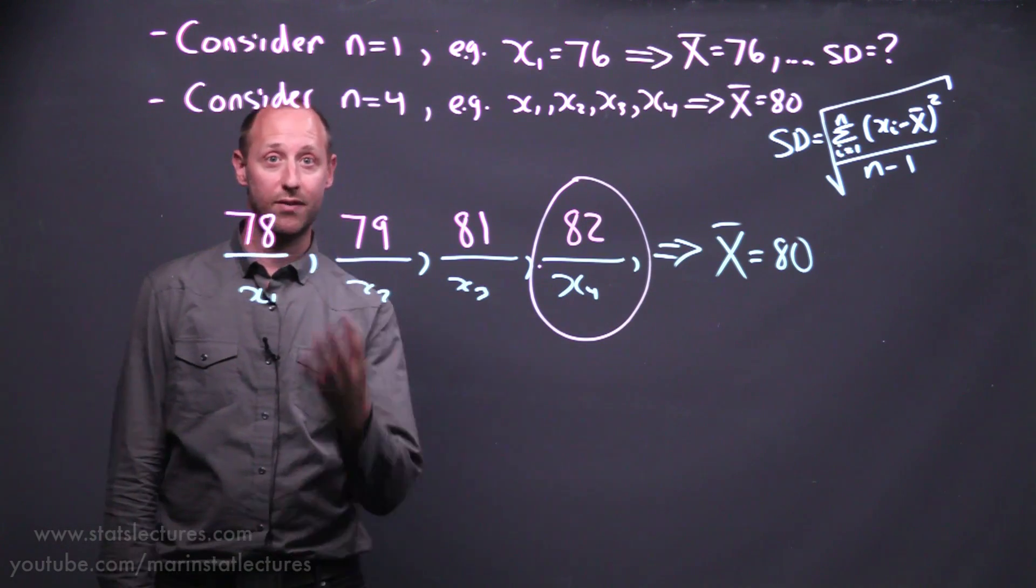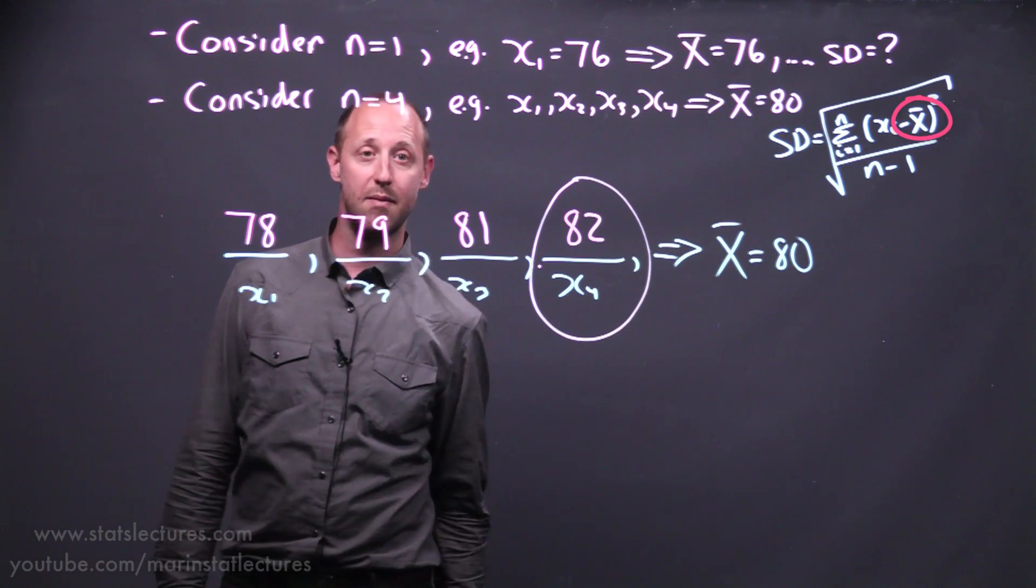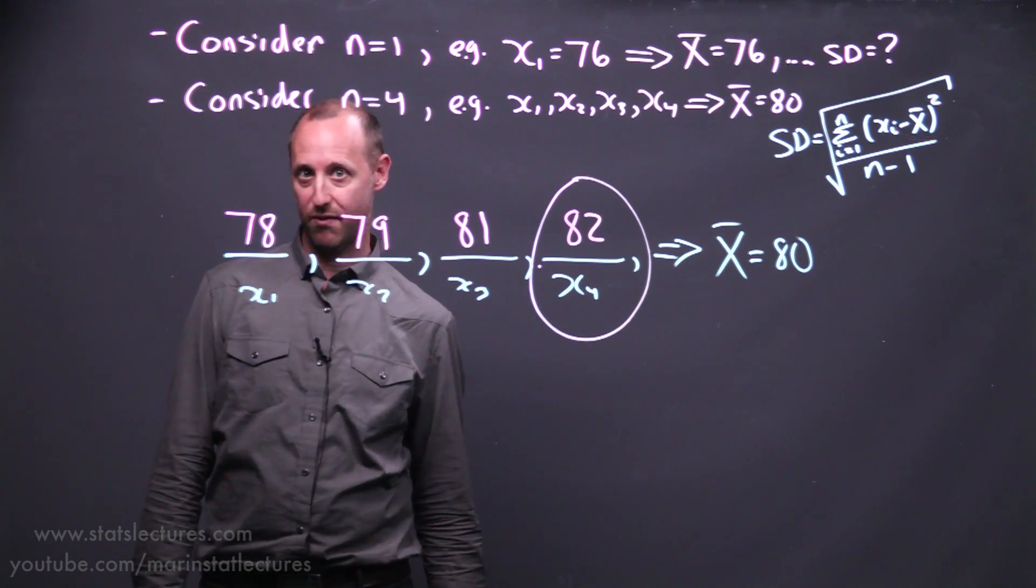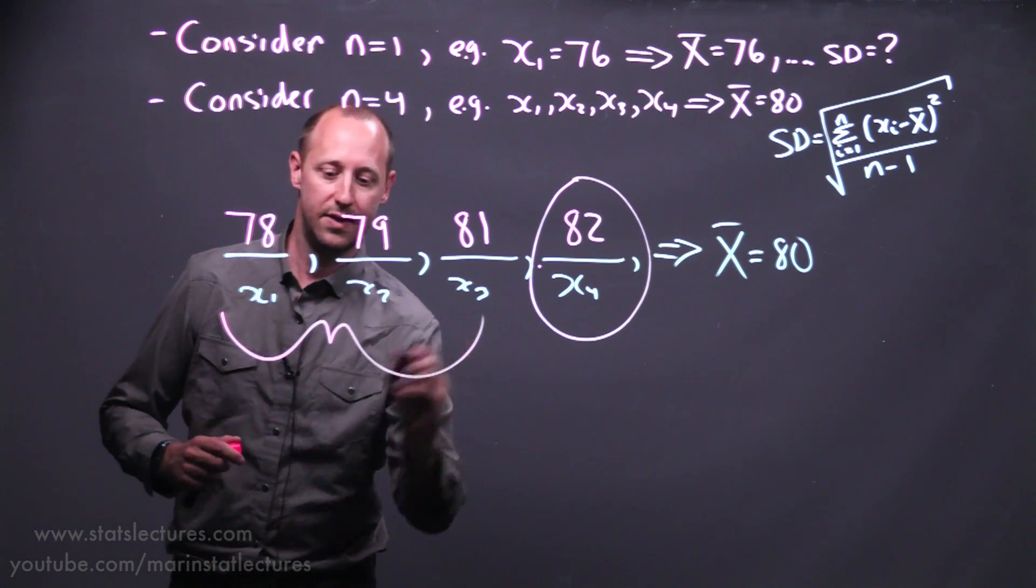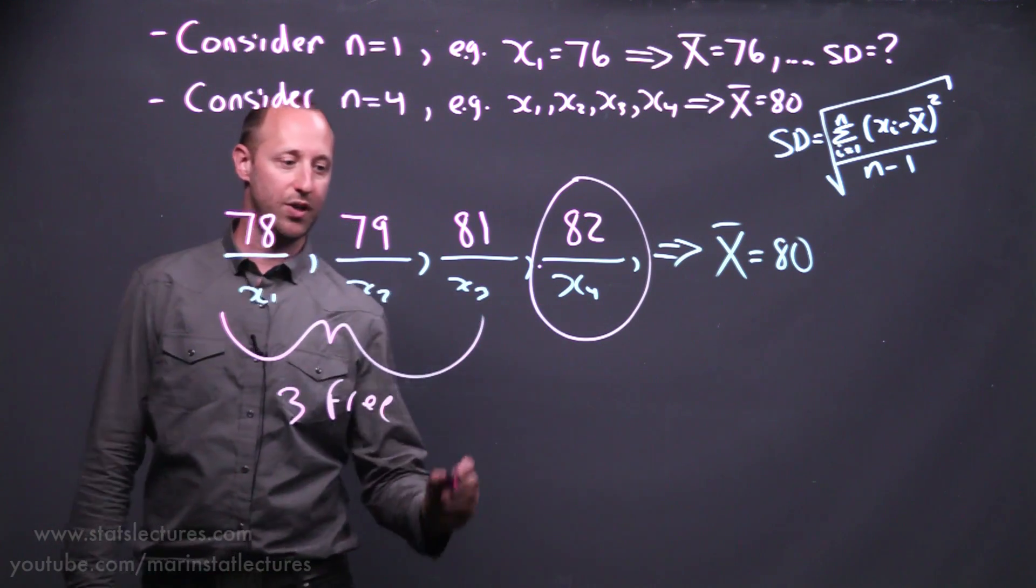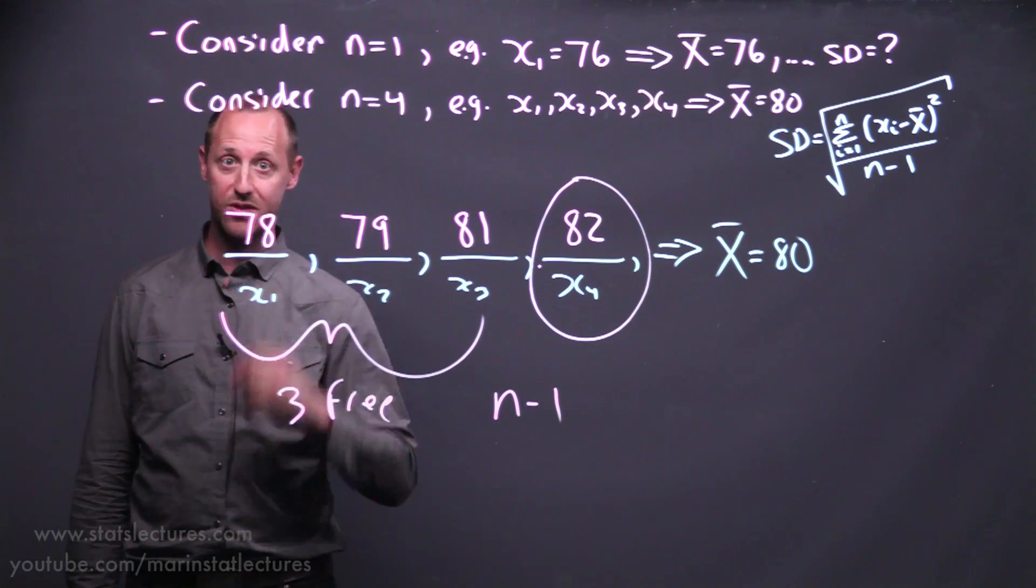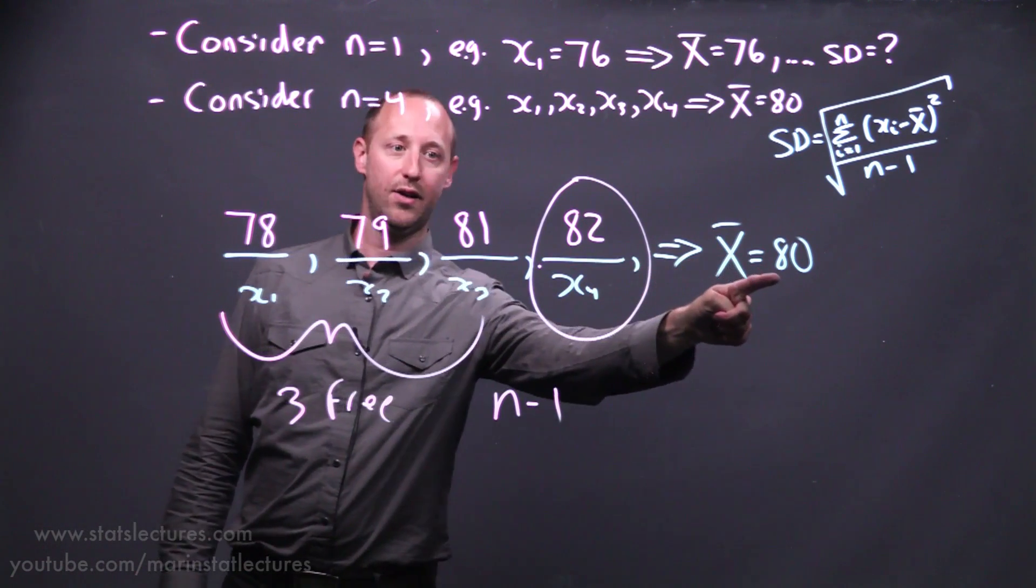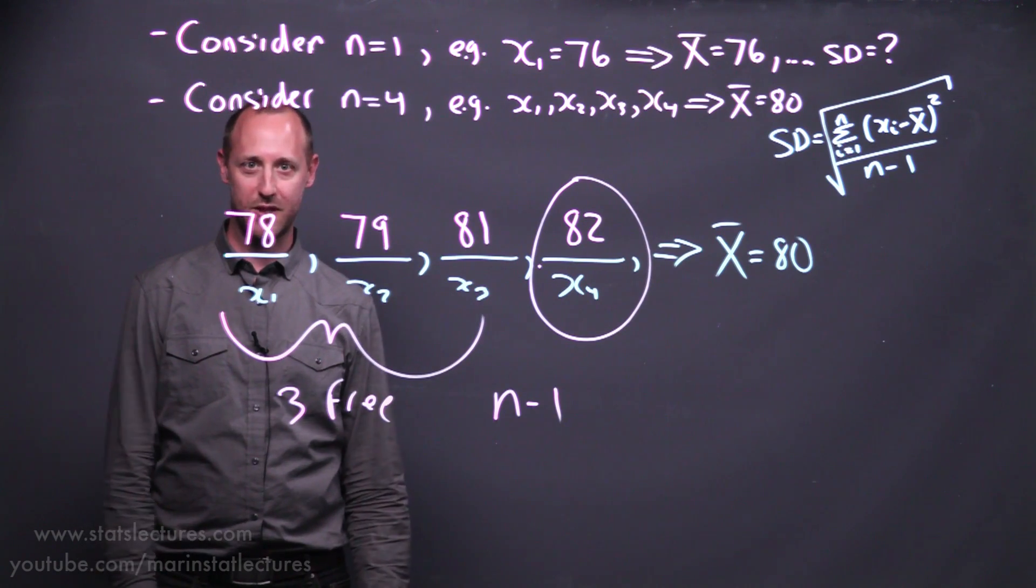So again, we can think of, we had four pieces of information or four observations. We used them to estimate the sample mean. We lost one degree of freedom. Only three useful pieces of information left or three degrees of freedom. So again, these here are our free observations. Here we lost one degree of freedom, n minus one. Again, we can think of the four pieces of information we have are here. One, two, three, and here's the fourth.